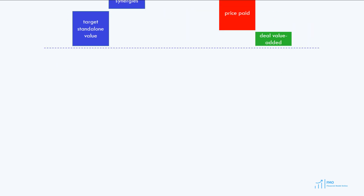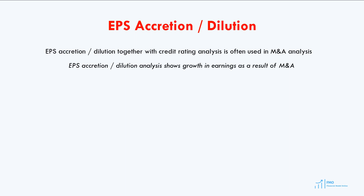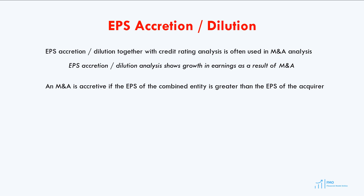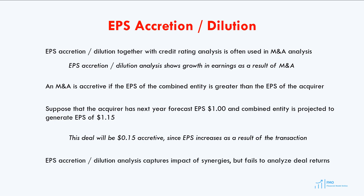Every M&A model typically includes EPS accretion dilution analysis and credit rating analysis. Market professionals tend to focus more on EPS accretion dilution than valuation analysis. EPS accretion dilution shows growth in earnings as a result of the acquisition. The transaction is considered accretive if the EPS of the combined entity is greater than the acquirer's EPS prior to the transaction. For example, if the acquirer has EPS of $1.00 and post-acquisition the combined entity generates EPS of $1.15, the transaction is accretive by 15 cents. However, EPS accretion dilution fails to capture whether the transaction creates or destroys value — making it a one-dimensional analysis.